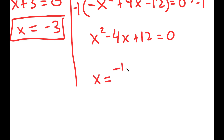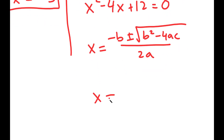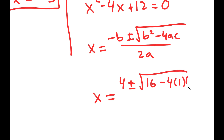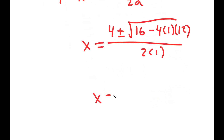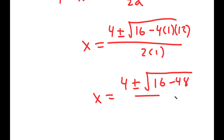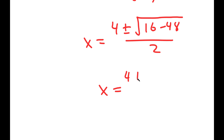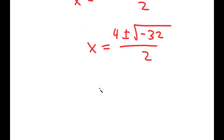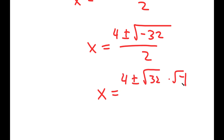Now to solve this, I'm going to use the quadratic formula, which is negative b plus or minus the square root of b squared minus 4ac, all over 2a. So this turns into 4 plus or minus the square root of 16 minus 4 times 1 times 12, all over 2 times 1, which is equal to 4 plus or minus the square root of 16 minus 48 over 2, which is equal to 4 plus or minus the square root of negative 32 over 2.